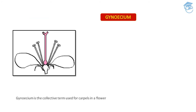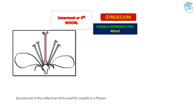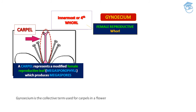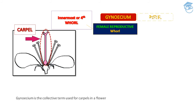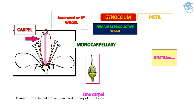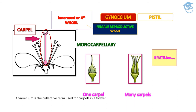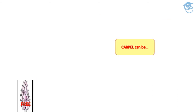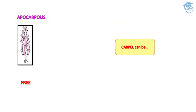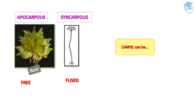Gynoecium is the fourth inner whorl that takes part in reproduction. Also called pistil or carpel, it is the female reproductive whorl. Gynoecium is the collective term for carpels in a flower. Carpel represents a modified female reproductive leaf called megasporophyll, which produces megaspores. If the pistil has one carpel it is monocarpellary; if it has many carpels it is polycarpellary. Carpels can be free — apocarpous (seen in rose) — or fused — syncarpous (seen in Hibiscus).